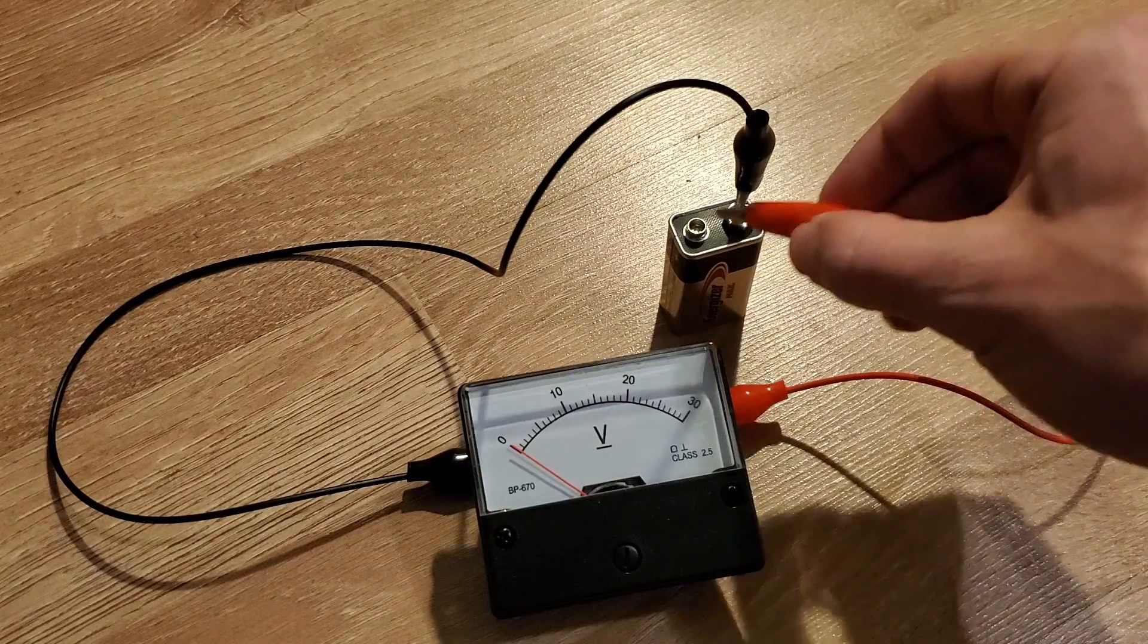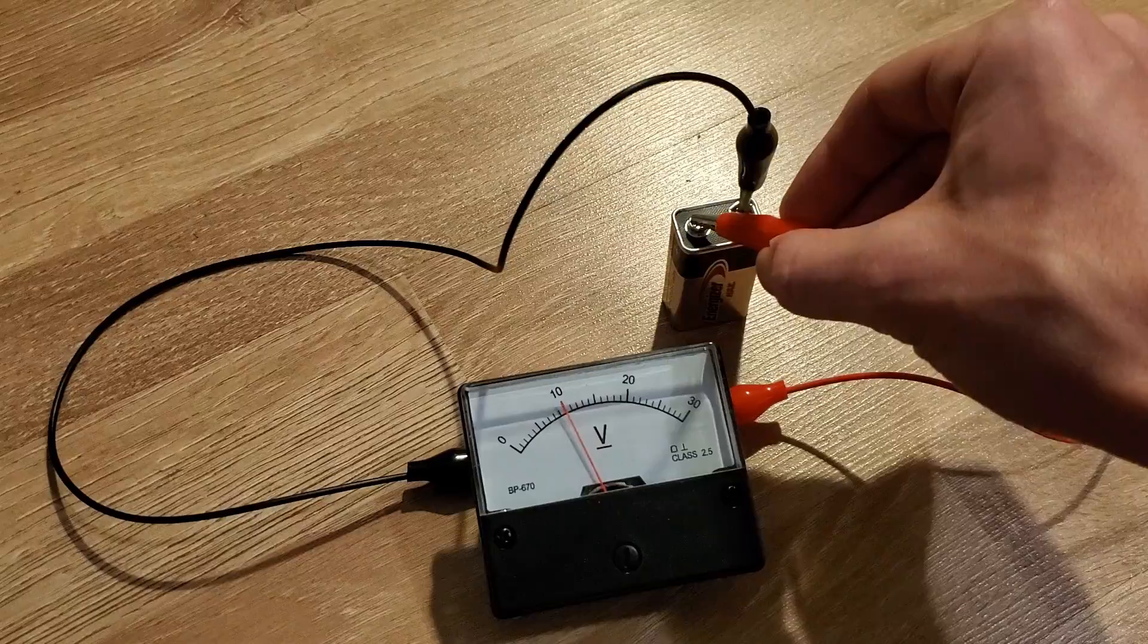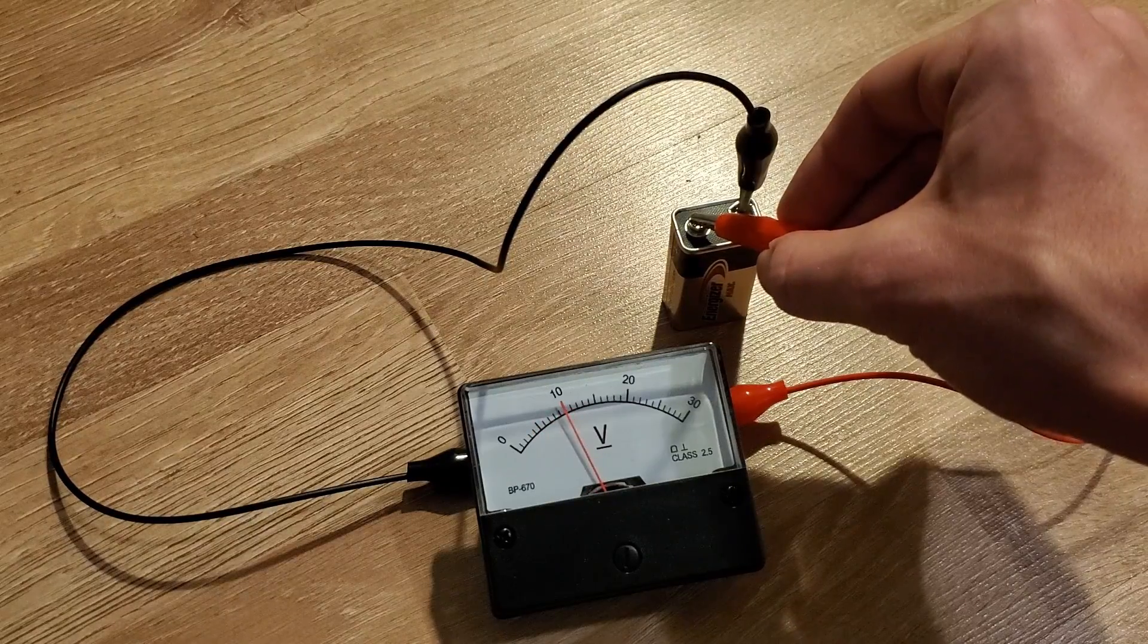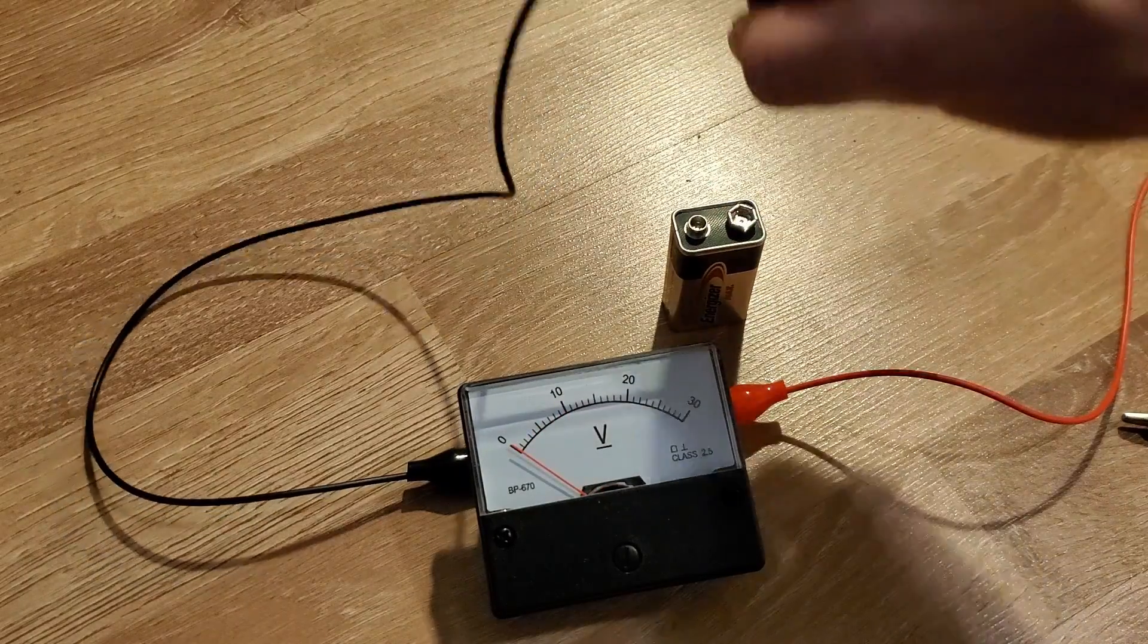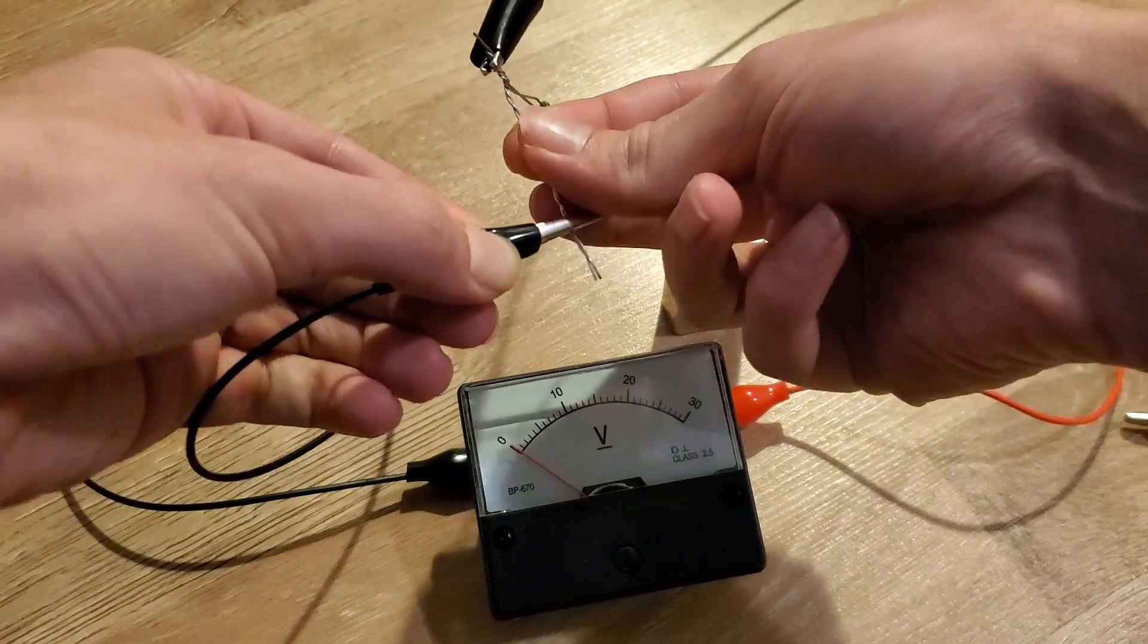As you can see, if we use the analog dial with the 30 volt range to measure a 9 volt battery directly, we read the 9 volt as expected. Once we switch the leads to add the 255 kOhm resistor, we now read 0.9 volts, showing that our voltage range is now actually 300 volts.